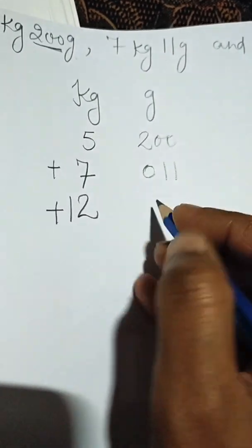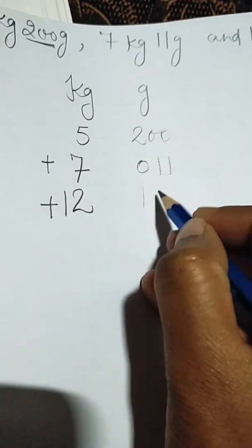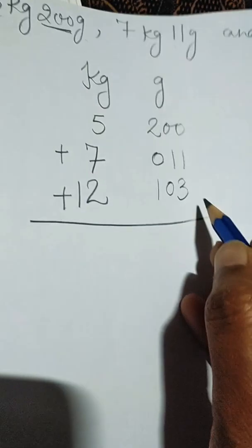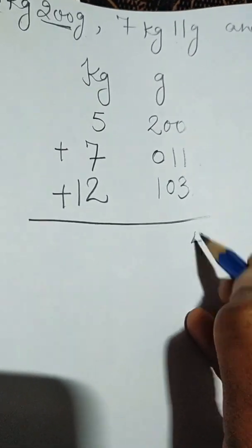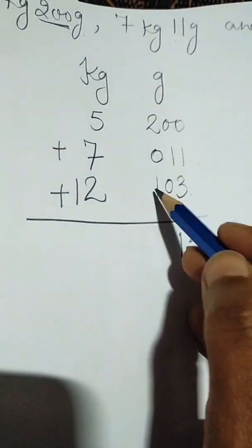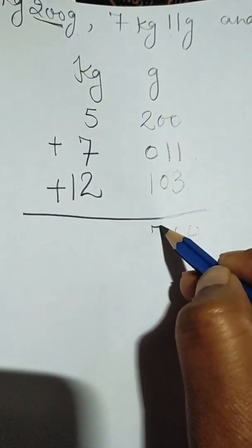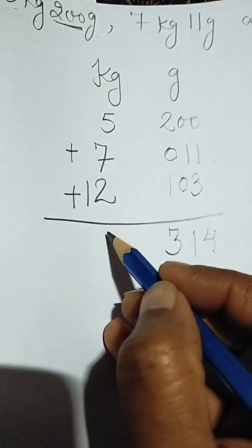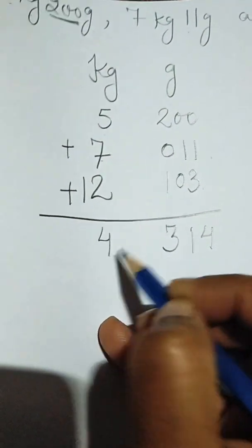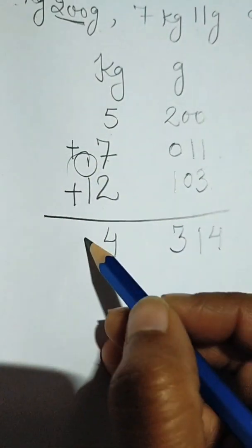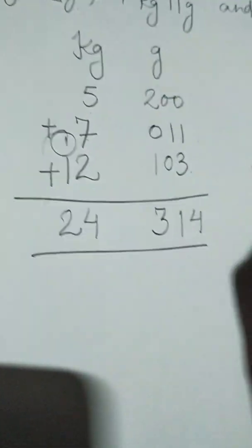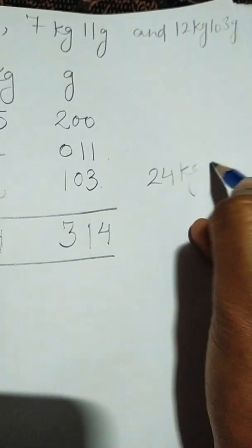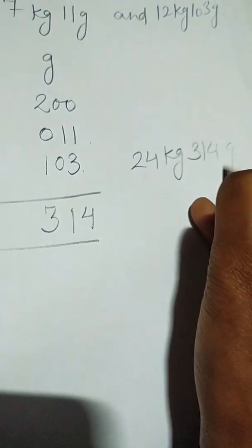Third statement is 12 kilogram 103 gram. Now we add: 3 plus 1 is 4, 1 plus 2 is 3, here 5 plus 7 is 12, 2 plus 1 is 3, carry 1, then 2. So we got 24 kilogram 314 gram as the answer.